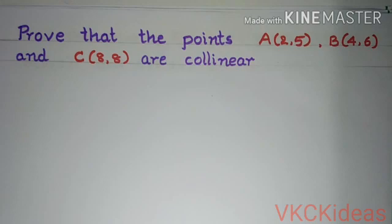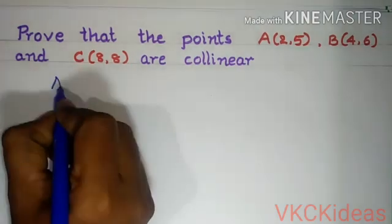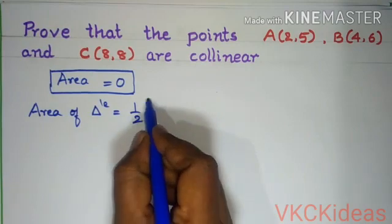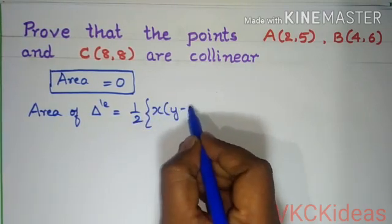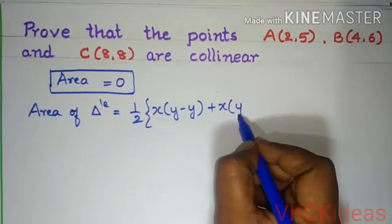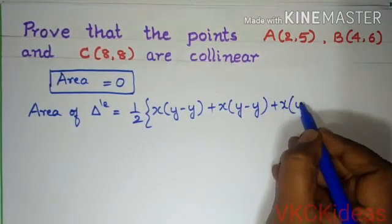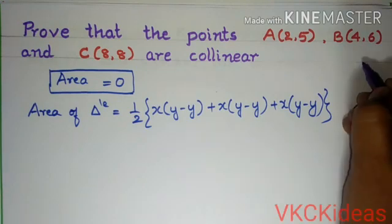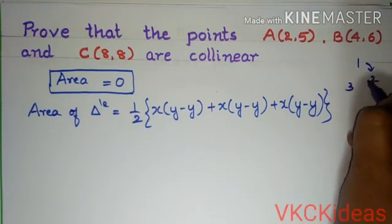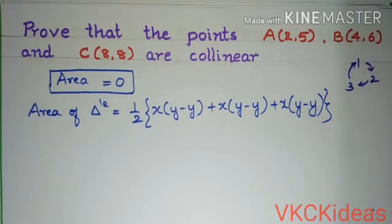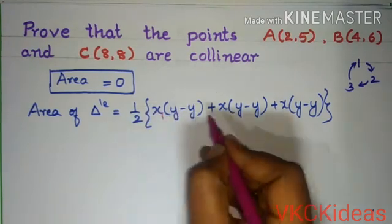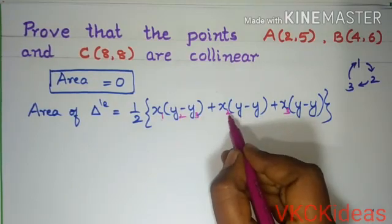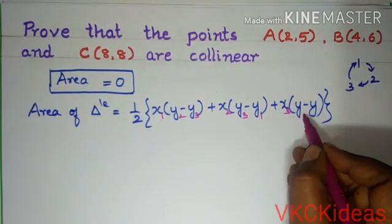Therefore, in this problem, we take the area of the triangle to be 0. The area of triangle is equal to half into x1(y2 − y3) plus x2(y3 − y1) plus x3(y1 − y2). We will take 1, 2, 3 in a cyclic order and fill in the numbers into the formula — that is x1, x2, x3. Now, 1 is followed by 2 and 3; 2 is followed by 3 and 1; 3 is followed by 1 and 2.